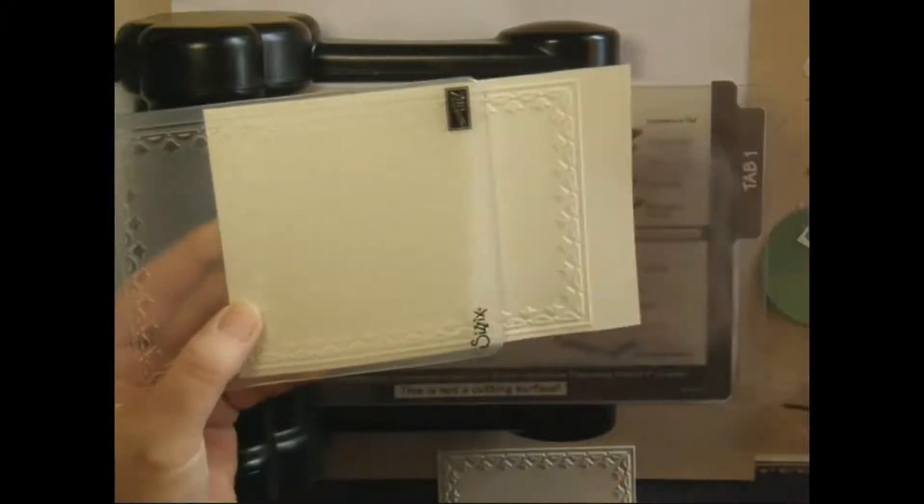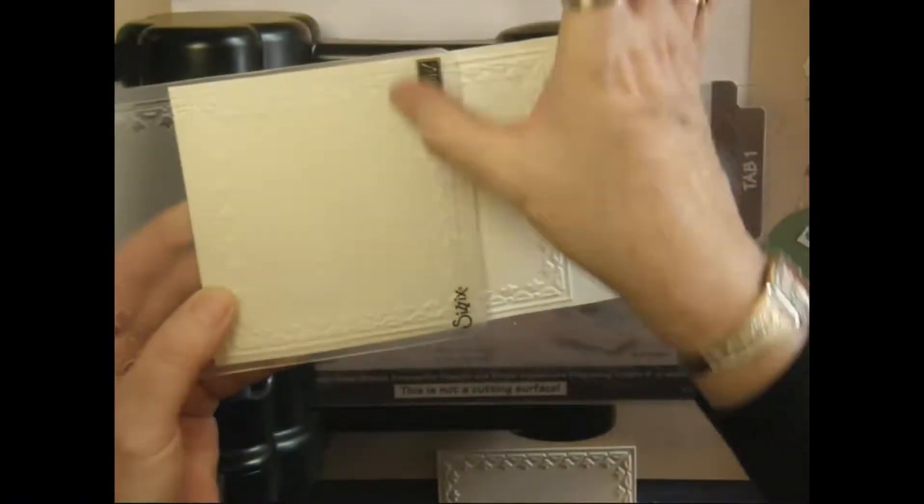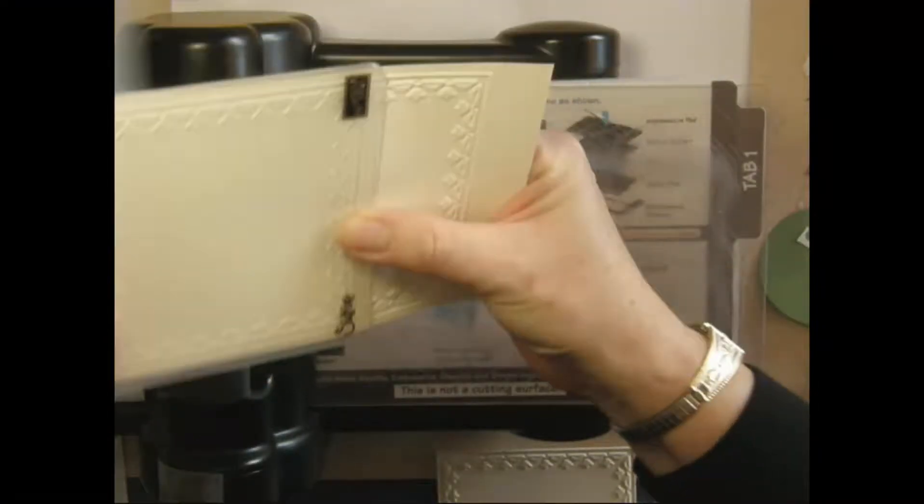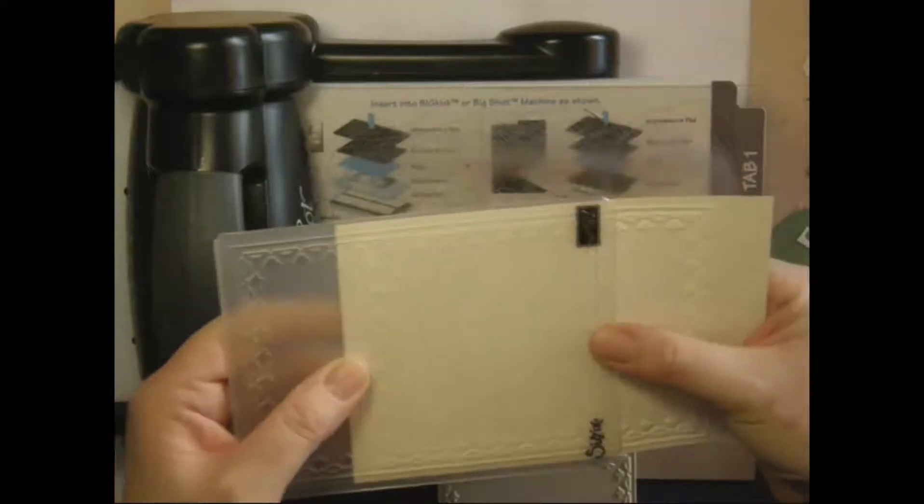And now we don't want to run this all the way through the machine. We only want to run it through to get this first border. Because we're going to cut the paper off after. So you just lay it where you want it and make sure it stays still.